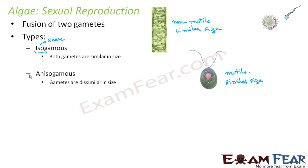The next type is anisogamous — 'an-iso' meaning not same — so the gametes are dissimilar in size; one is larger and the other is smaller. An example of anisogamous algae is some species of Chlamydomonas. Note that Chlamydomonas is a genus, not a species, so within that genus some species are isogamous while other species of Chlamydomonas are anisogamous, having gametes of different sizes.